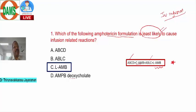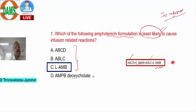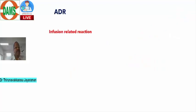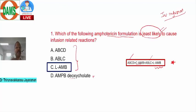The least infusion reaction occurs with liposomal amphotericin B. This is an important statement from Goodman and Gilman on which this question is framed. The major difference between new formulations and conventional amphotericin B is that infusion-related reactions are most common with colloidal dispersion.